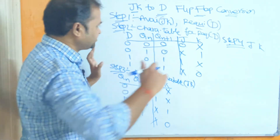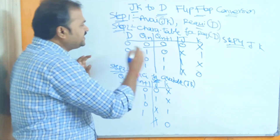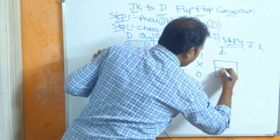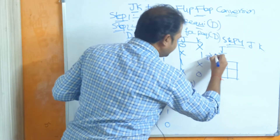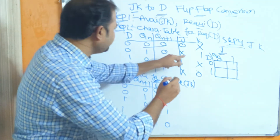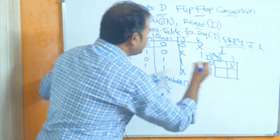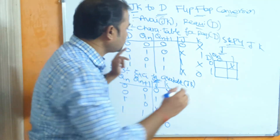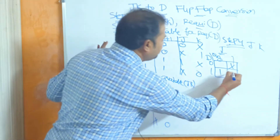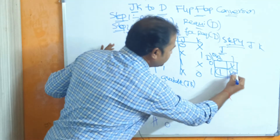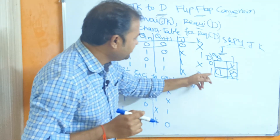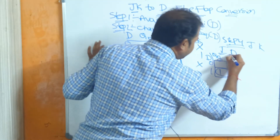Now based upon the J and K columns we evaluate the expressions. For J, the inputs are D and Qn, so a two-variable Karnaugh map is enough. Observing the J column: D=0, Qn=1 gives don't care; D=0, Qn=0 gives don't care; D=1, Qn=0 gives 1; D=1, Qn=1 gives don't care. We can combine these two cells as a group. Qn is changing from 0 to 1 so we don't consider it, and D value is 1, so the expression for J is D.